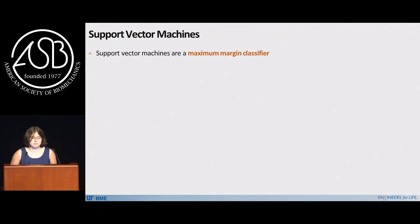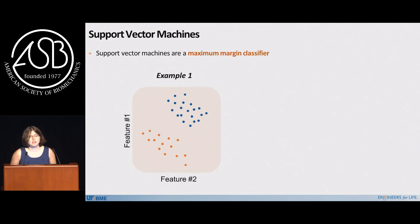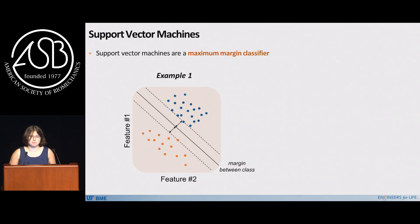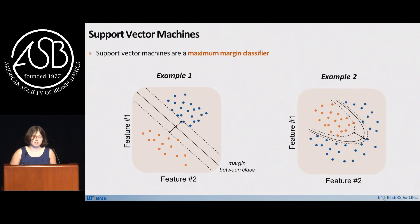The first method is support vector machines, called a maximum margin classifier. If I took two features — and I'll demonstrate everything in two-dimensional space because you can visualize it, though I can also do this in nine dimensions or a hundred dimensions — and plotted them against each other, the goal is to separate the orange dots from the blue dots. The maximum margin classifier defines the maximum margin between them, which in this case could be done by a straight line. You can also use parabolic curves or really any type of curve that math will allow you to define.